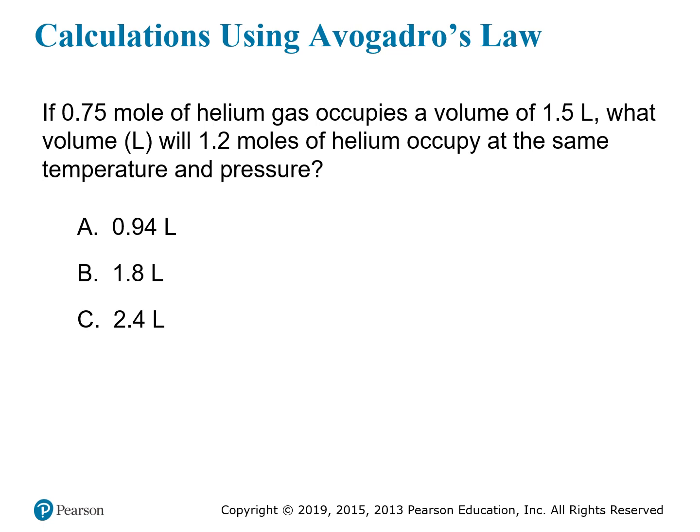Let's do a quick example. If 0.75 moles of helium gas occupies a volume of 1.5 liters, what volume will 1.2 moles of helium occupy at the same temperature and pressure? You can see this is comparing two different samples — one sample of helium is 0.75 moles, and the other is 1.2 moles. It's a comparison between two different gases at the same temperature and pressure.